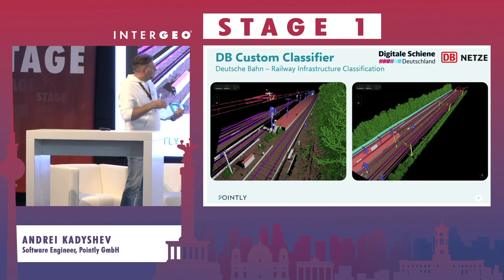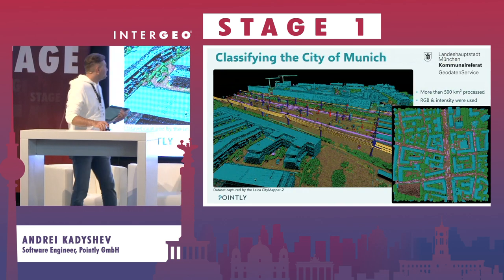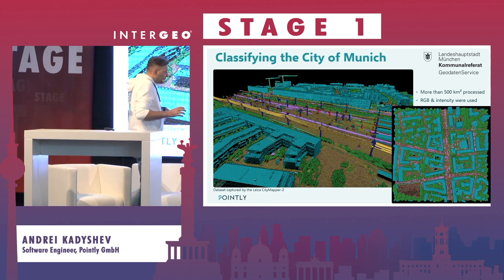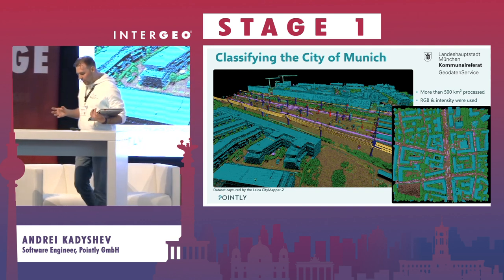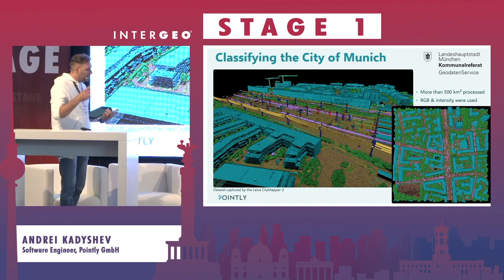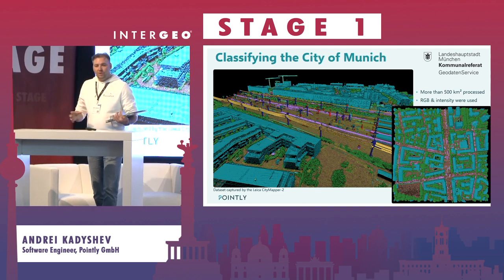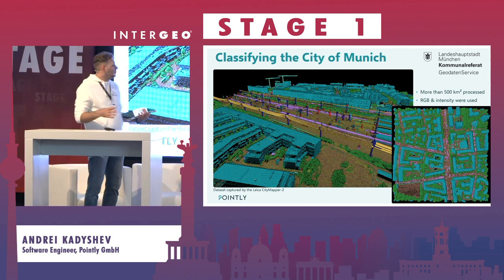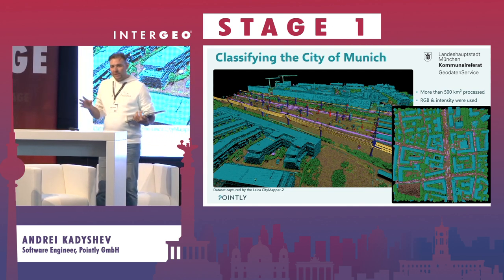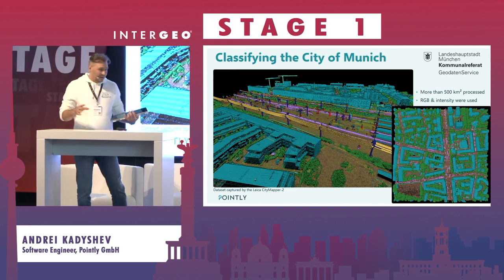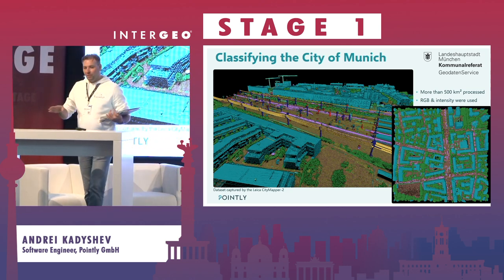This is a classifier for railways covering platforms, catenary poles, equipment for electric lines, and so on. Coming back to the time-consuming question — how much time is required for processing these point clouds? Together with the City of Munich, we classified scans of the entire city — more than 500 square kilometers of area. The dataset contained 2,000 point clouds with a total of 84 billion points, and we spent just four days processing all of this enormous data.